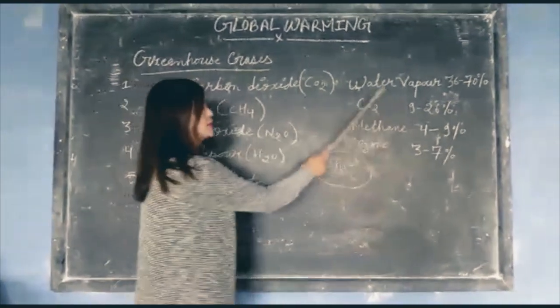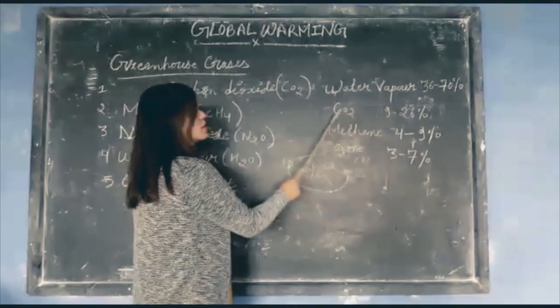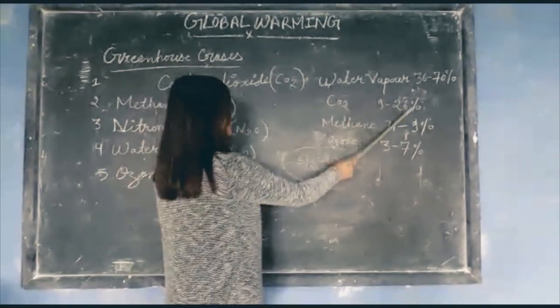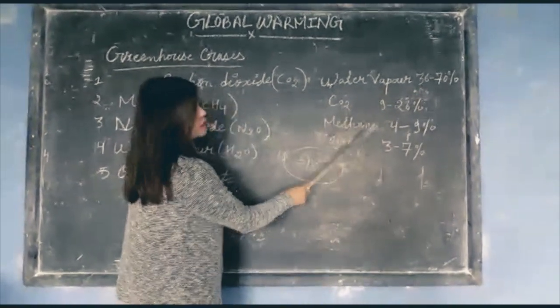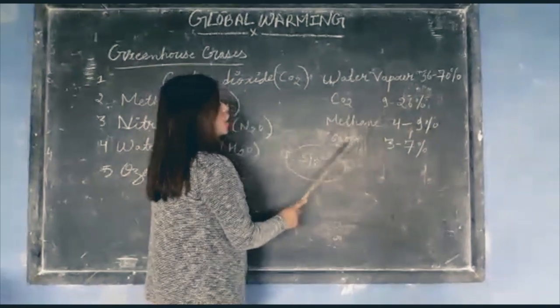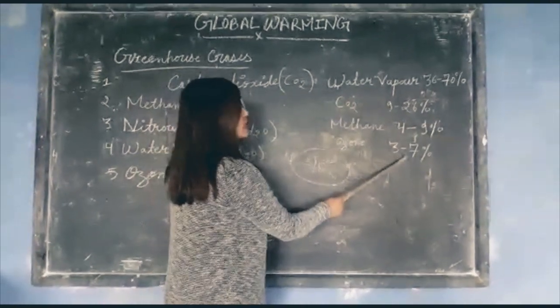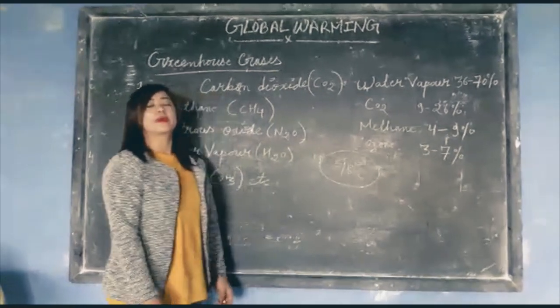Water vapour contributes 6 to 70 percent. Carbon dioxide contributes 9 to 26 percent. Methane contributes 4 to 9 percent. Ozone contributes 3 to 7 percent to global warming.